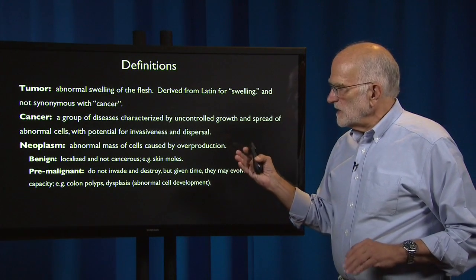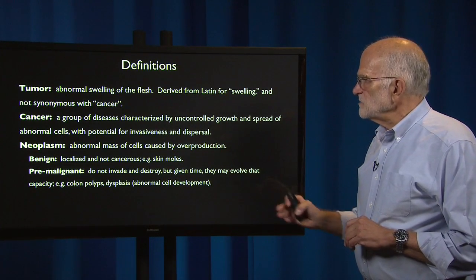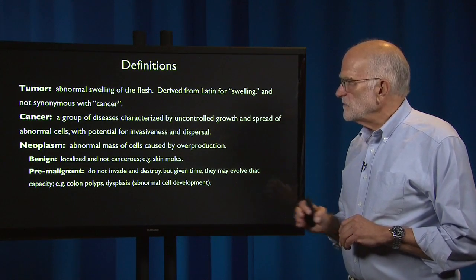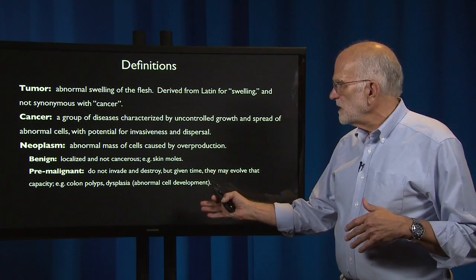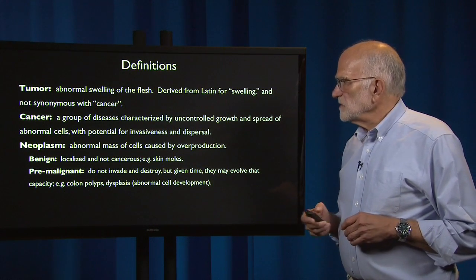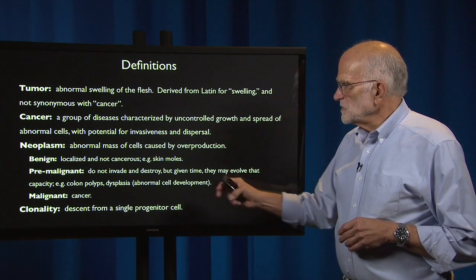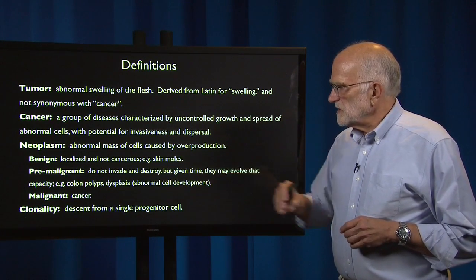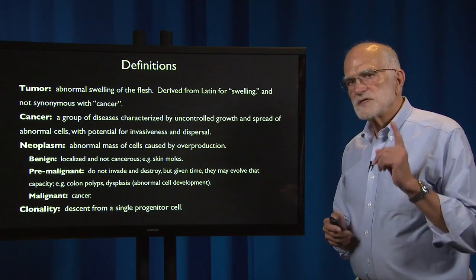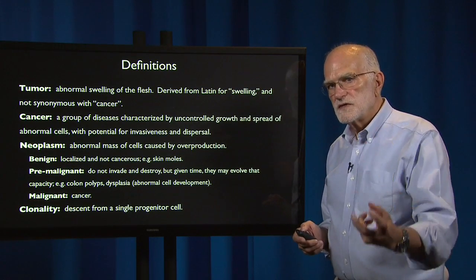However, benign neoplasms can also be pre-malignant. A pre-malignant neoplasm doesn't invade and destroy, but given time, they can evolve. A classic example is a colon polyp, or a dysplasia, which is an abnormal cell development. A malignant cancer is one that has metastasized. Clonality means descent from a single progenitor cell, so all the cells within a clone share a single genotype.